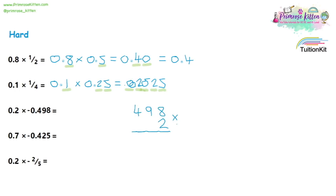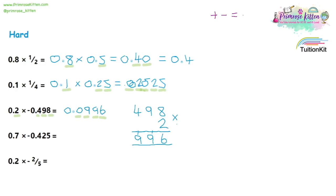For the next question, we do 498 times two, giving us 996. Looking at the question, we have something to one decimal place and something to three decimal places, giving us four decimal places in total. So we put a zero in front of the nine, then the decimal point, then another zero. And because in the question it was minus 0.498, we need a negative sign, giving us an answer of minus 0.0996.